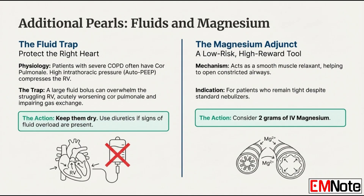For a patient with really bad bronchospasm not responding to standard nebulizers, think about intravenous magnesium. It's an effective smooth muscle relaxant that provides additional bronchodilatory effect, complementing inhaled therapies. The dose is 2 grams of IV magnesium given over about 15 to 20 minutes. It's safe and can often provide the boost needed to avoid escalating care.